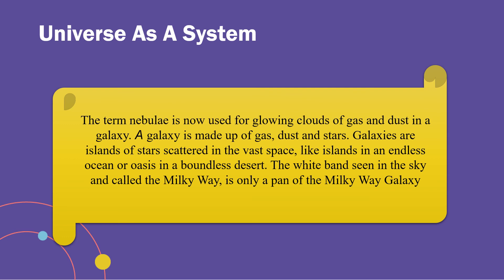The term nebula is now used for glowing clouds of gas and dust in a galaxy. A galaxy is made up of gas, dust, and stars — galaxies are islands of stars scattered in vast space, like islands in an endless ocean or oases in a boundless desert. The white band seen in the sky is the Milky Way, which is the only visible pan of our galaxy we can see. Nebula refers to glowing clouds of gas and dust within a galaxy.